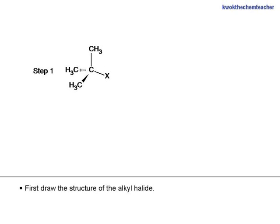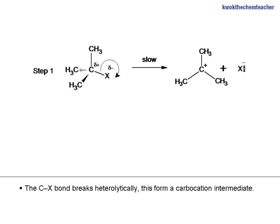First, draw the structure of the alkyl halide. The C-X bond is polar, with a delta plus on carbon and a delta minus on X. The C-X bond breaks heterolytically, forming a carbocation intermediate.